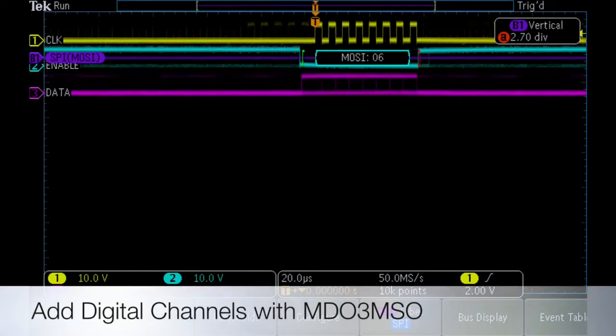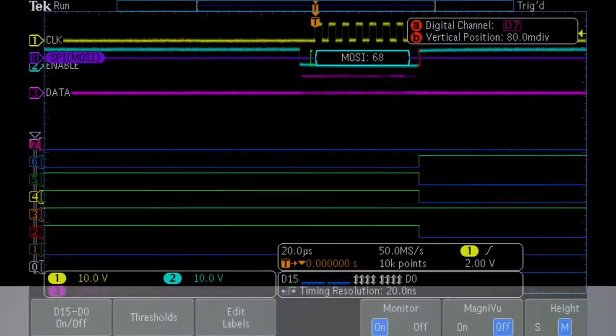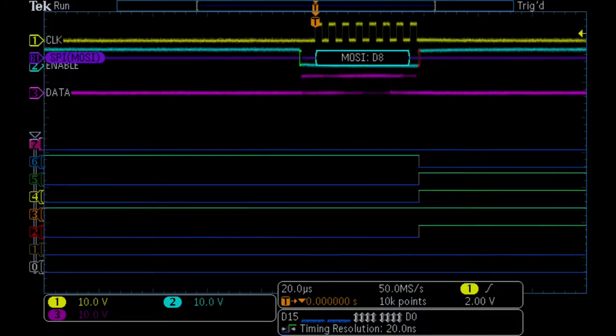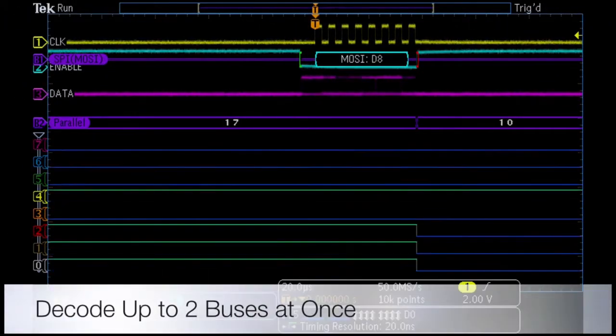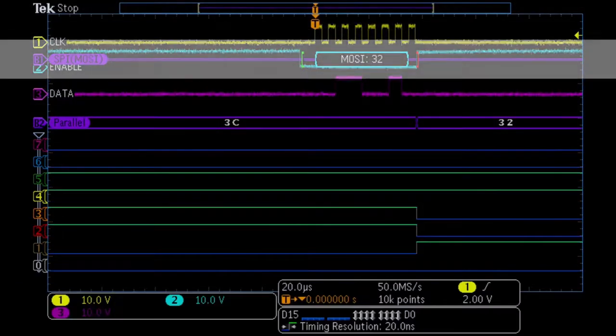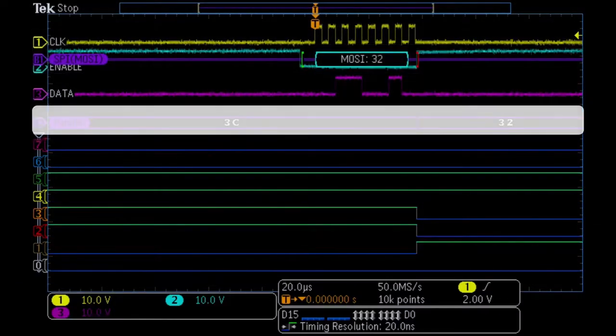We also want to examine an 8-bit parallel bus, so we will add the digital channels and turn on the parallel bus decode. We can now see the timing relationships between the serial and parallel bus data.